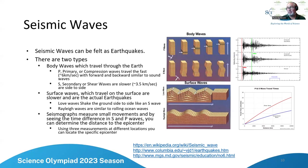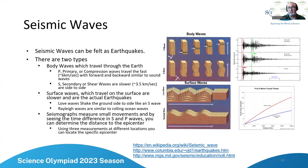When we feel an earthquake, we're experiencing surface waves. Body waves — the P and S waves — are the ones we actually measure to figure out where the epicenter is. Body waves traveling throughout the Earth's crust are much faster; surface waves are much slower, not even 3.5 kilometers per second.